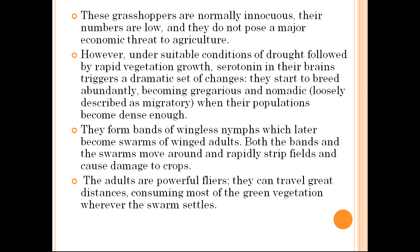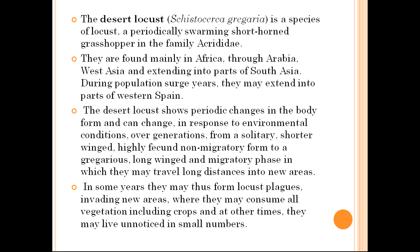Nomadic means they are migratory. They form bands of wingless nymphs which later become swarms of winged adults. Both the bands and the swarms move around and rapidly strip fields, causing damage to crops. The adults are powerful flyers and can travel great distances, consuming most of the green vegetation wherever the swarm settles.